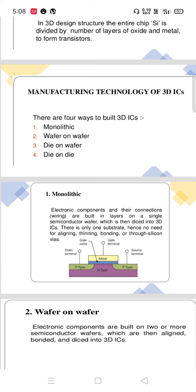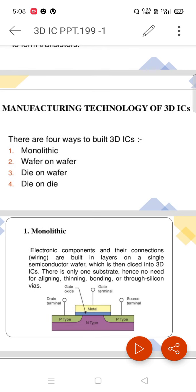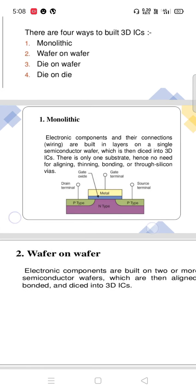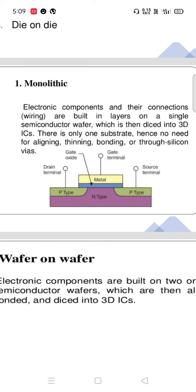Now let us discuss monolithic, the first step of manufacturing IC circuits. Electronic components and their connections are built in layers on a single semiconductor wafer, which is then diced into 3D ICs. There is only one substrate, hence no need of aligning, thinning, bonding, or through-silicon vias. From the diagram, we can notice P-type and N-type. This is a P-type semiconductor with N substrate. Above that, we have drain terminal and source terminal. In between the drain and source, we have gate terminal.